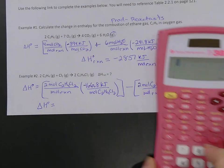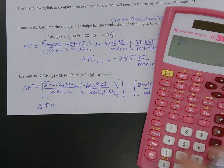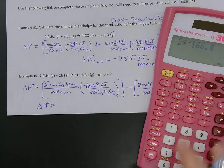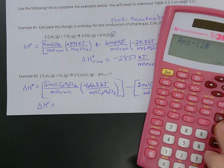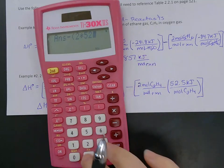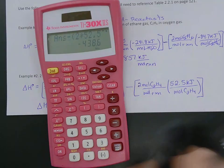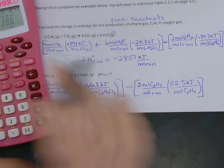So we've got two times negative 166.8 minus two times 52.5 and I get negative 438.6.